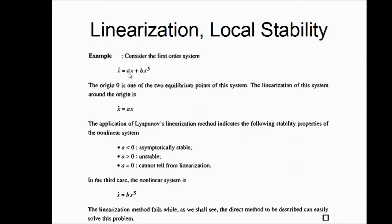When A is strictly negative, the system is asymptotically stable — asymptotic stability is assured. If A is positive, then the system is unstable; Lyapunov's linearization theorem says it is unstable for the non-linear system as well. When A equals zero, we cannot tell anything from the linearization. The non-linear system in this third case becomes x-dot equal to bx^5. The linearization theorem cannot give any conclusion here; however, Lyapunov's direct method can describe the stability of the system easily.